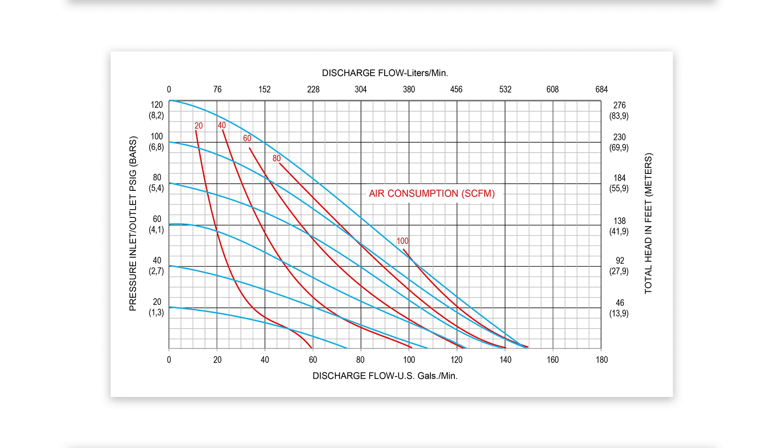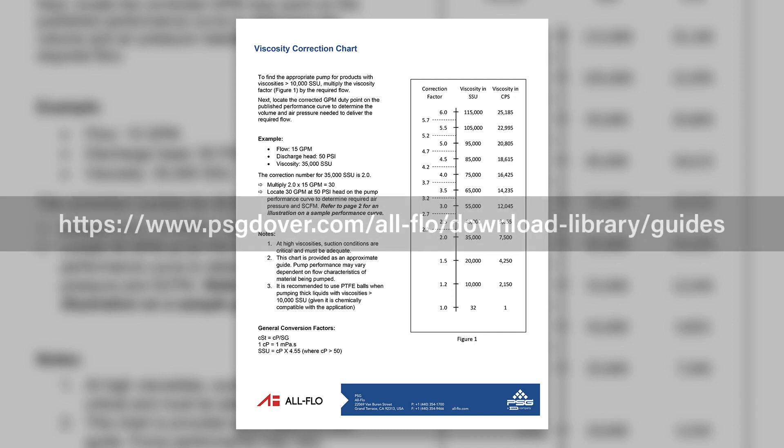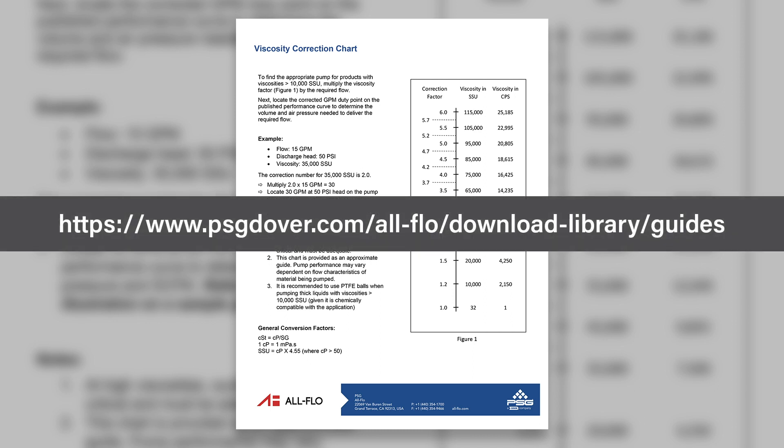However, if the application requires the AODD pump to pump something much more viscous than 2150 centipoise, a small calculation can be made to help read the performance curve. Refer to AllFlow's viscosity correction chart located within the guide section of the download library on AllFlow's website.